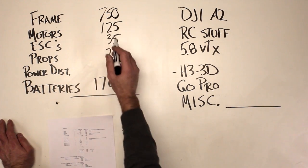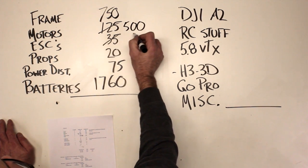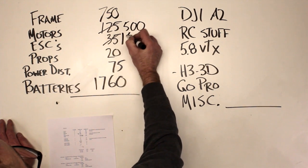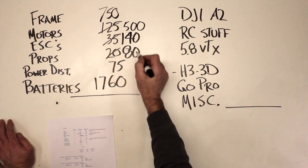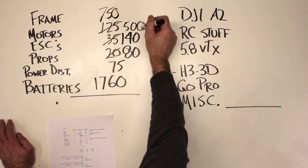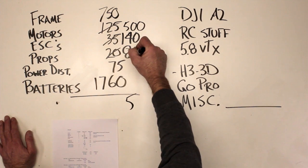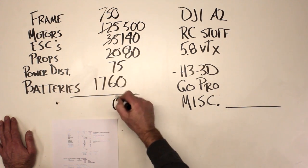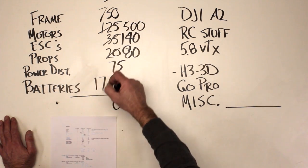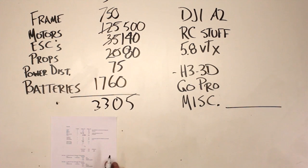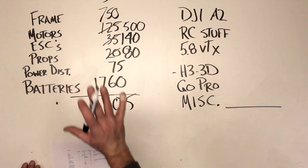So the frame, the motors at 125 each, that's going to be 500. The ESCs, there's going to be four of those, so that's 140. Props, that's going to be 80. So 750, 500, 500, 5, 5, 5, 9, 17, 24, 30, 10, 15, 16.